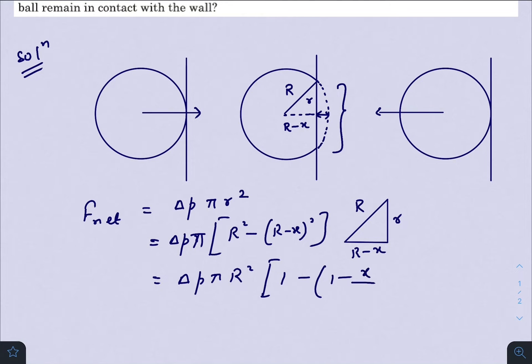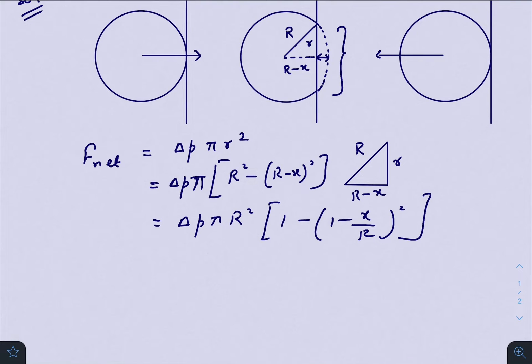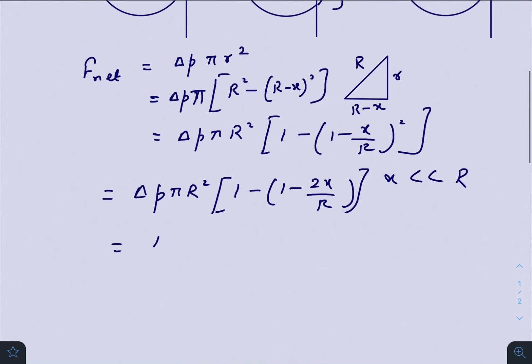And as we know that x is very much smaller than R, so there we can take a binomial approximation to x by R. So the final equation looks like this: π R times 2 into x.